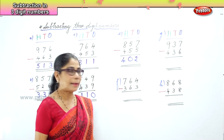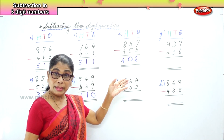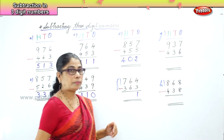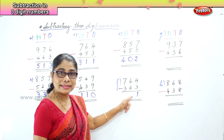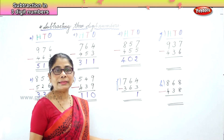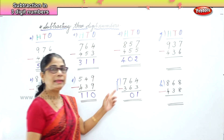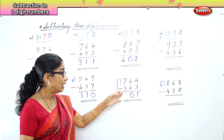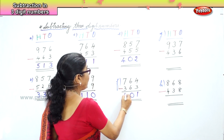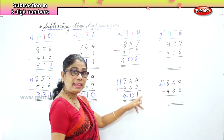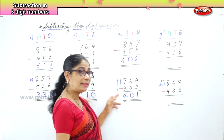Now let's look at this sum. In the 1s place, we have 4 ones minus 3 ones. 4 take away 3 is 1. Next, in the 10s place: 6 tens minus 6 tens. 6 take away 6 is 0. And in the 100s place: 700 take away 300. 7 minus 3 is 4. The answer is 401.